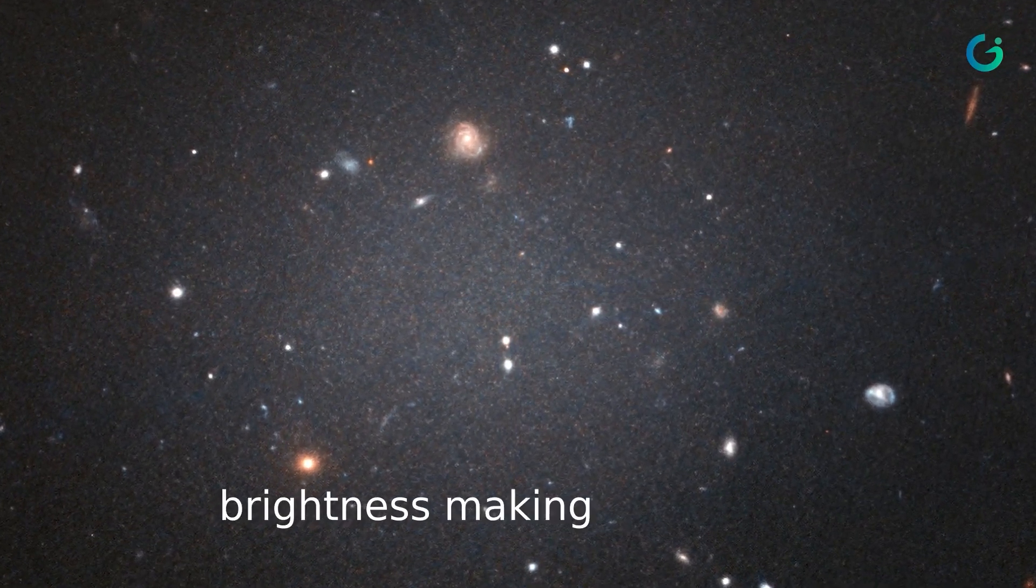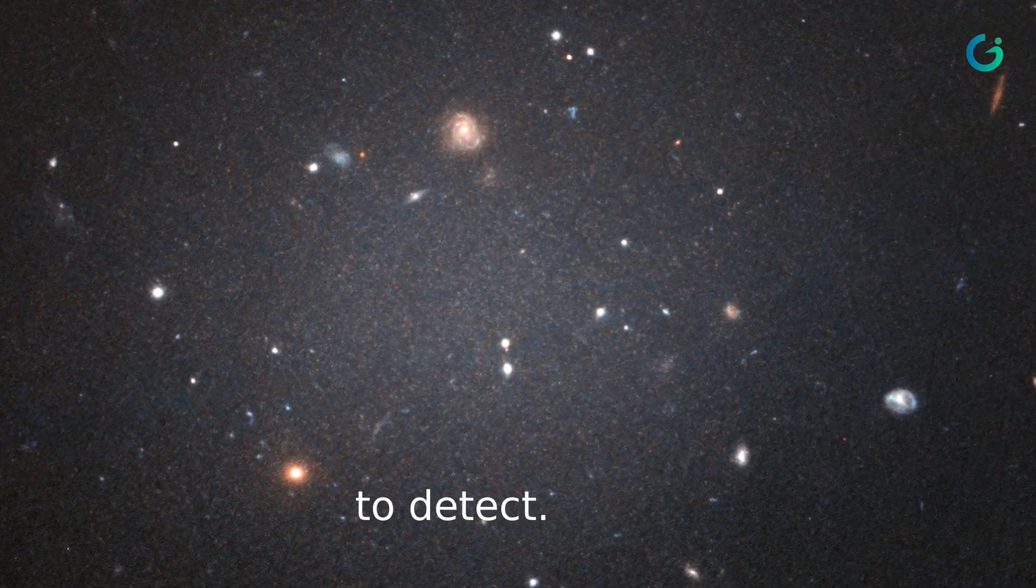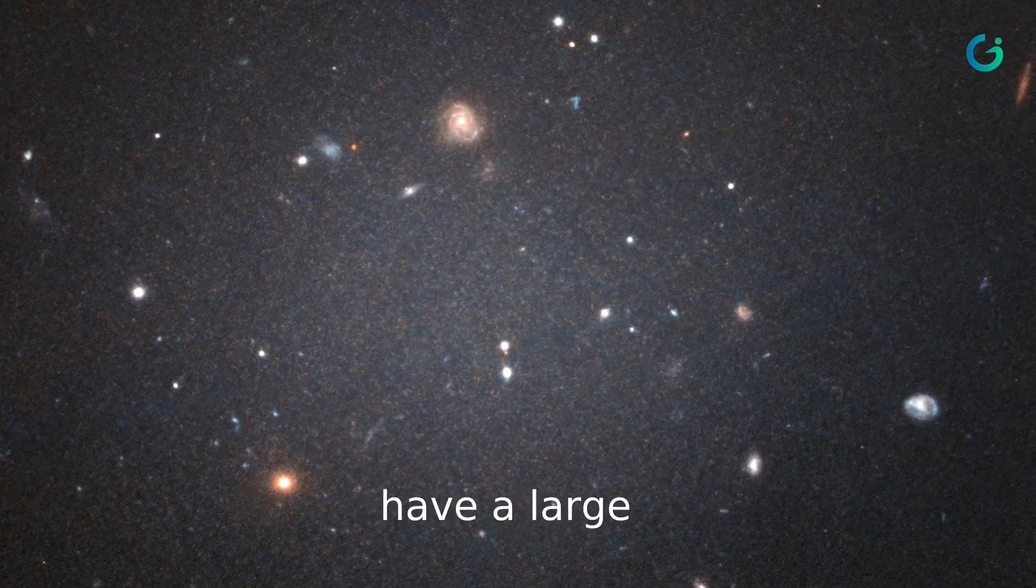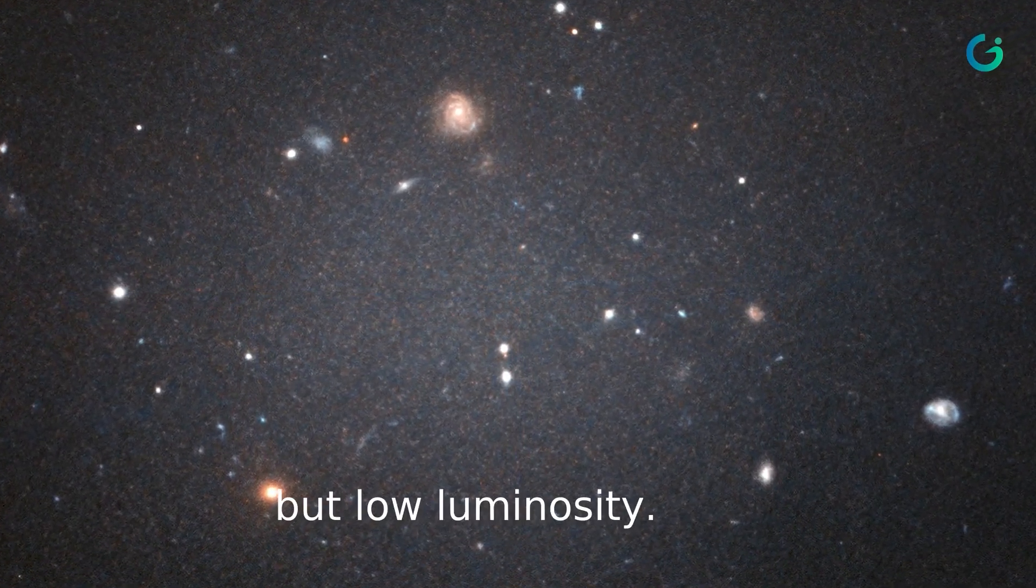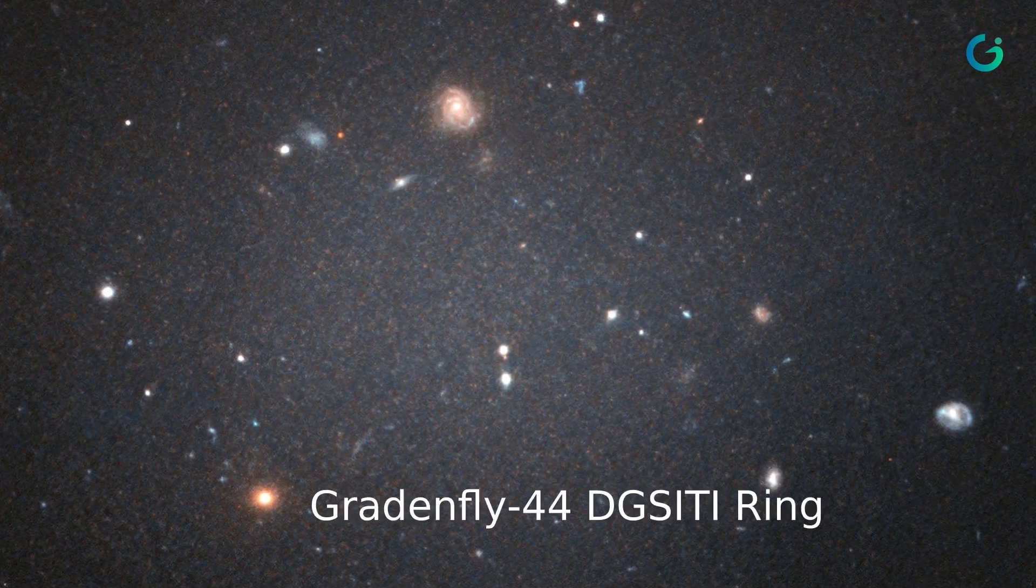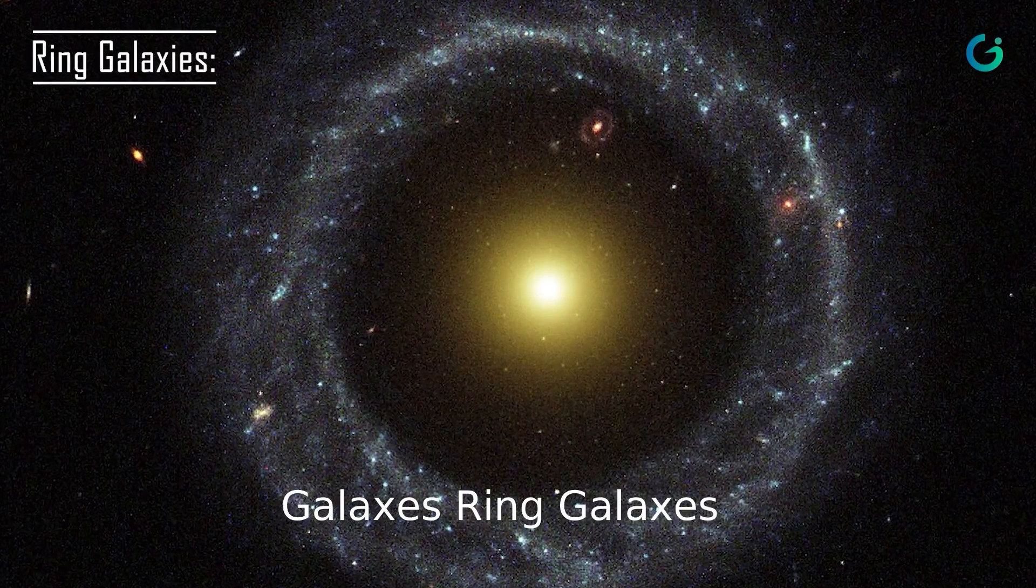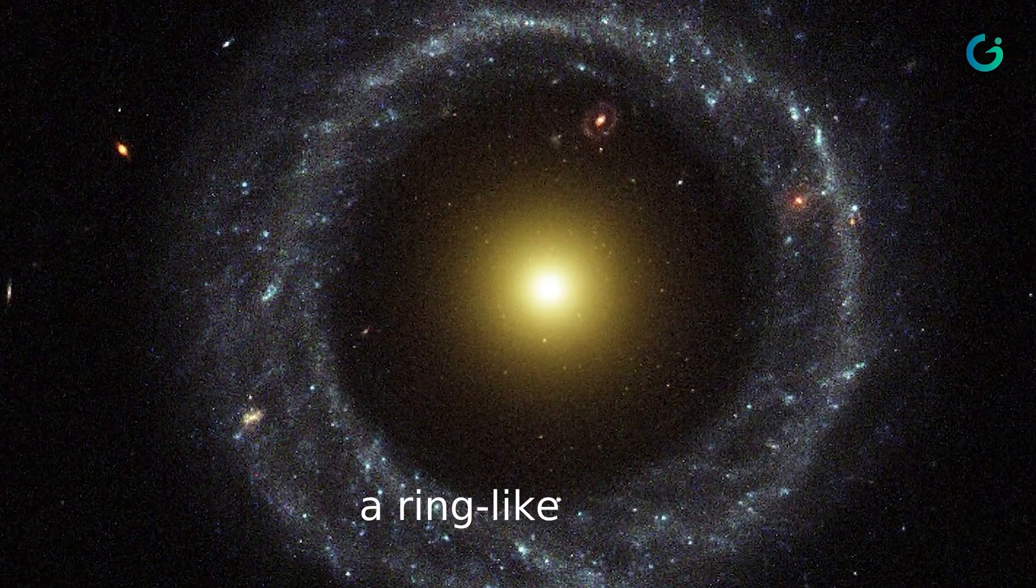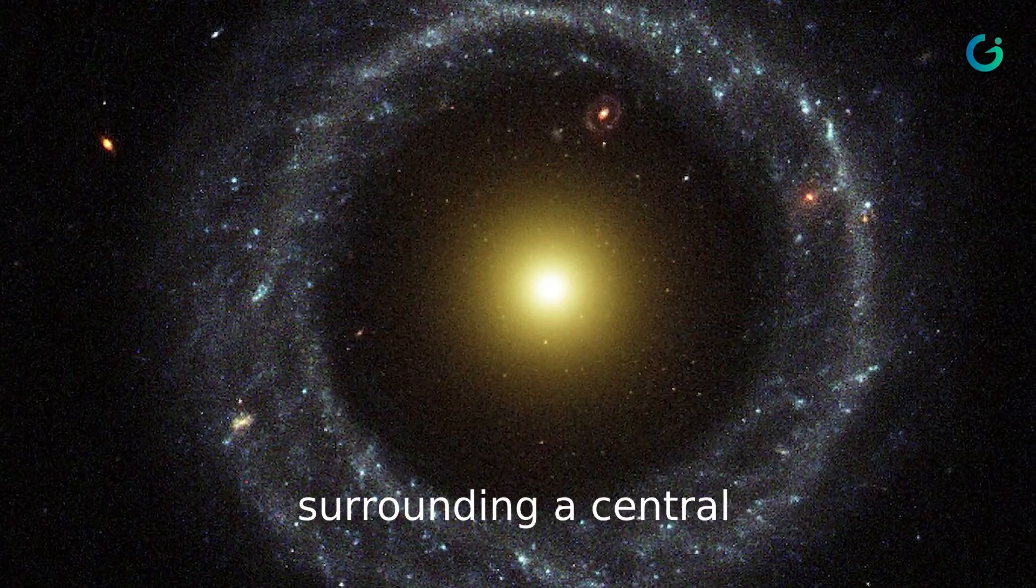Ultra-diffuse galaxies have low surface brightness making them challenging to detect. They may have a large size but low luminosity. Examples include Dragonfly 44 and DF-SETI.